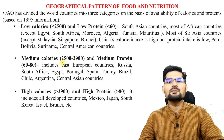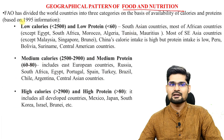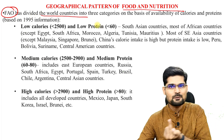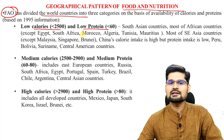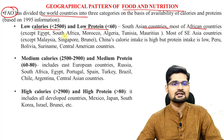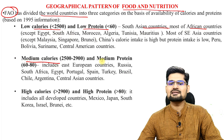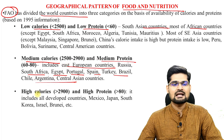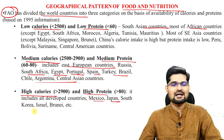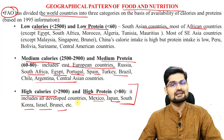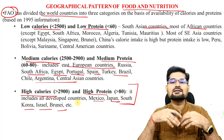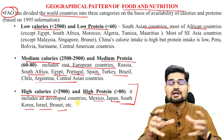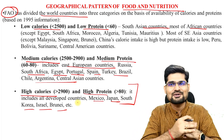Looking at the geographical pattern of food and nutrition across the world: the Food and Agriculture Organization has divided world countries into three categories. Low calories and low protein countries include South Asian countries and most African countries. Medium calories and medium protein countries include East European countries, Russia, South Africa, Egypt, Portugal, Spain, and Brazil. High calories and high protein countries include Mexico, Japan, South Korea, Israel, and Brunei. This is the nutrition security pattern on the world map.